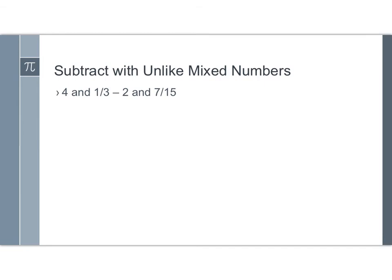Here's an example using subtraction. 4 and 1/3 minus 2 and 7/15. The first thing I look at are those denominators. I've got a denominator of 3 and a denominator of 15. I cannot subtract these the way they are now, so I'll rewrite these using equivalent fractions. Start with the two little equal signs, and then so we don't forget, rewrite the whole numbers, 4 and 2.